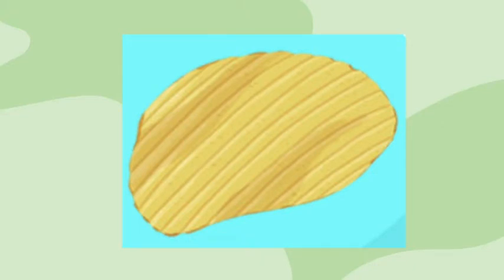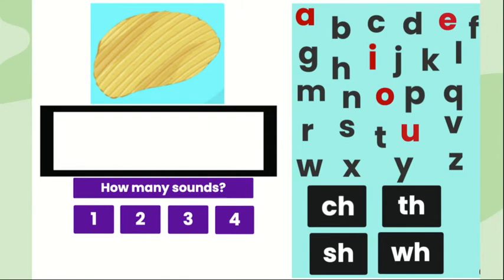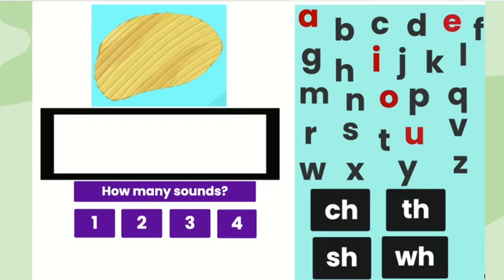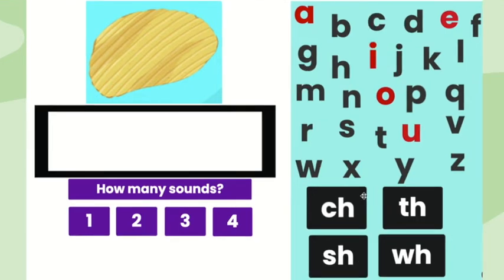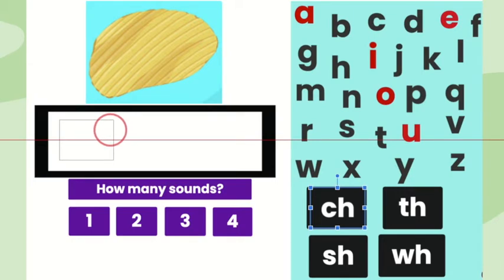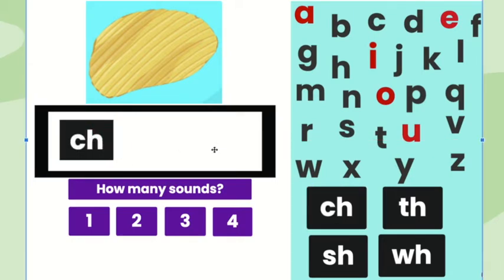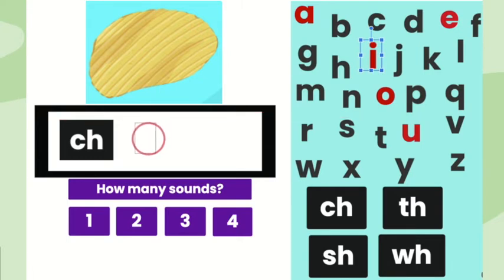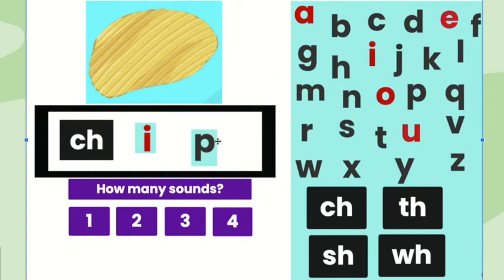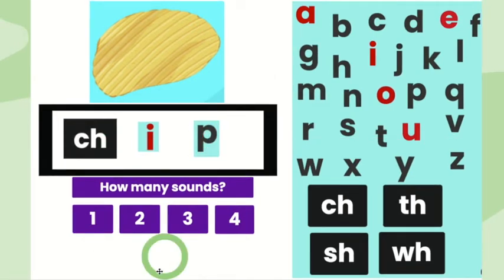Here's our next word, chip. We're going to create the word chip using our letters. After that, we are going to circle how many sounds are in the word chip. The first sound in chip is ch, so I will use the letters C-H. The middle sound in chip is i, so I will use the letter I. The final sound in chip is p, so I will use the letter P. There are three sounds in the word chip.